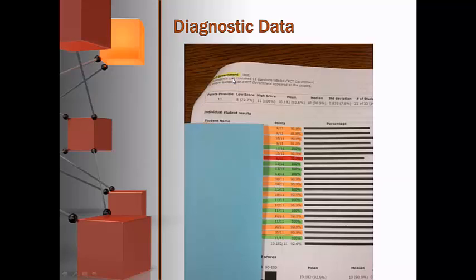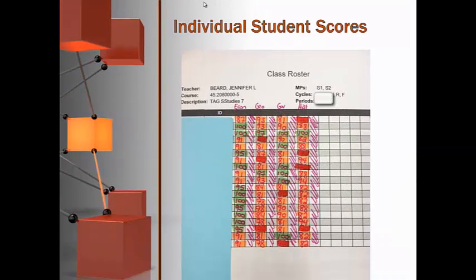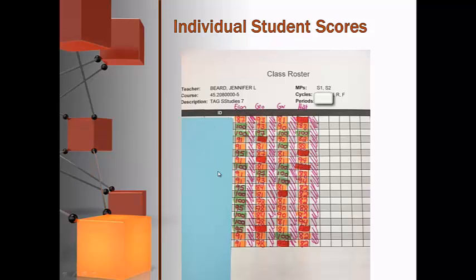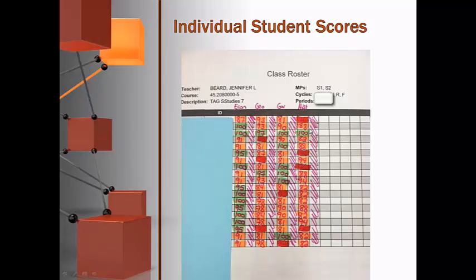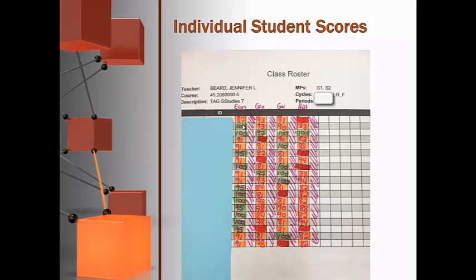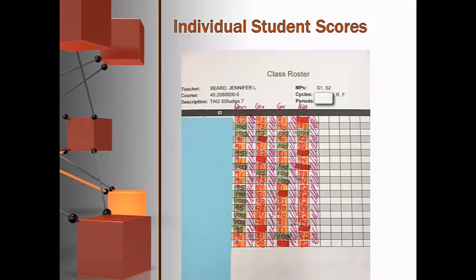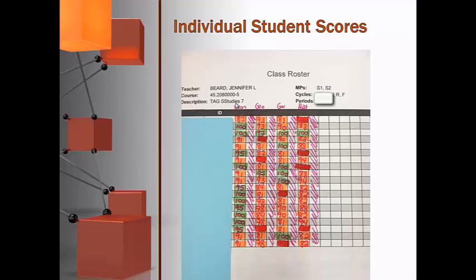I looked at all five of my classes and how each individual student did in each of the four strands, and wrote it down on a little matrix — with my students' names covered for confidentiality — showing my economics, geography, government, and history strands for each student. I held individual student conferences, calling students up to my desk to look at their scores, find their strengths and weaknesses, and develop a personalized plan for their CRCT review.